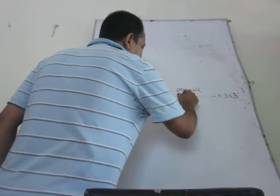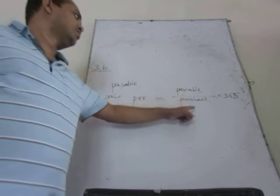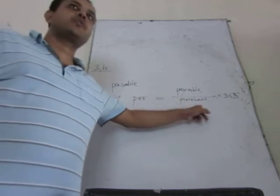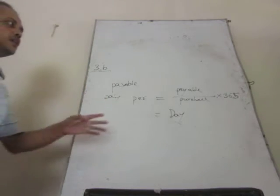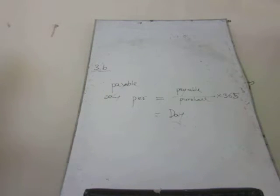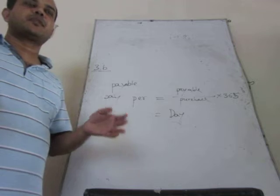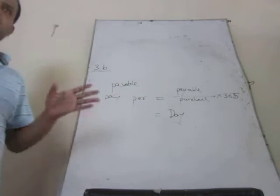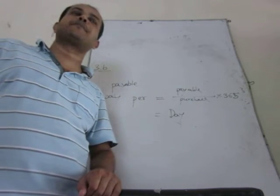Payment period: the formula is payable to purchase multiplied by 365. Normally this is credit purchase because payable is related to credit purchase. If the calculated payable payment period is 15, that means on average, to meet up your required payment to the specific supplier, you are taking 15 days — the average time you take to pay the supplier.